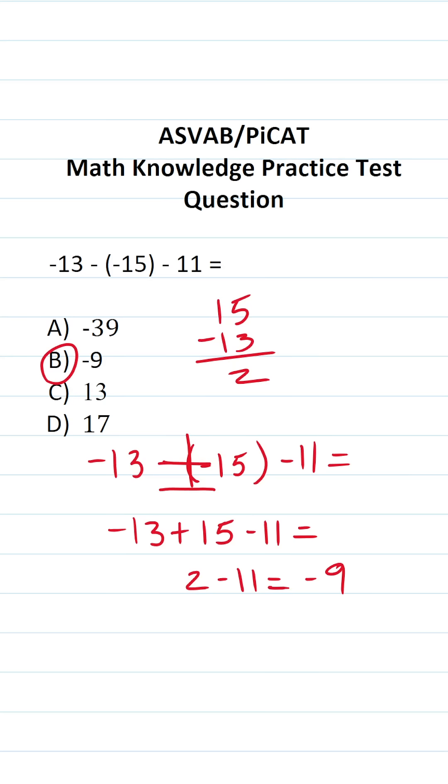Again, if you can't do this part mentally, it's the same thing as 11 minus 2, which is 9. But since we're subtracting a larger value than 2, we know our result is going to be negative. So the answer to this one, of course, is B, negative 9.